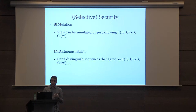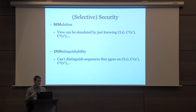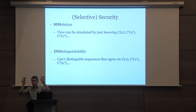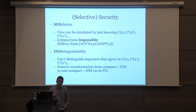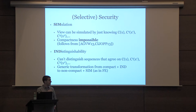Security can be defined in two natural ways. Simulation security says that if you have all the values of all the evaluations, you can simulate the view of the original encoding and all the updates. Indistinguishability security says that if a sequence of evaluations agree, then the original encoding and sequence of updates will be indistinguishable. Similar to the functional encryption literature, compactness is impossible in the simulation setting, and there's a generic transformation from an indistinguishable scheme with compactness to a simulation scheme without compactness.